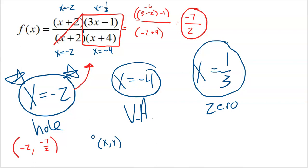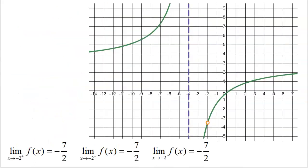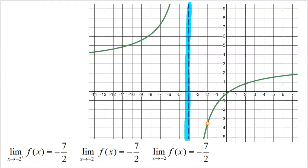I'm listing this as a point, but really a hole is an open dot — you still need to identify where it's located. Let's look at the graph. We can see that at negative four there's a vertical asymptote. At negative 2 comma negative seven halves, we have the hole — there's nothing there, but I had to put a point to represent where that nothing is. And at one third there's a solution or zero. So we see the vertical asymptote, the hole, and the solution.